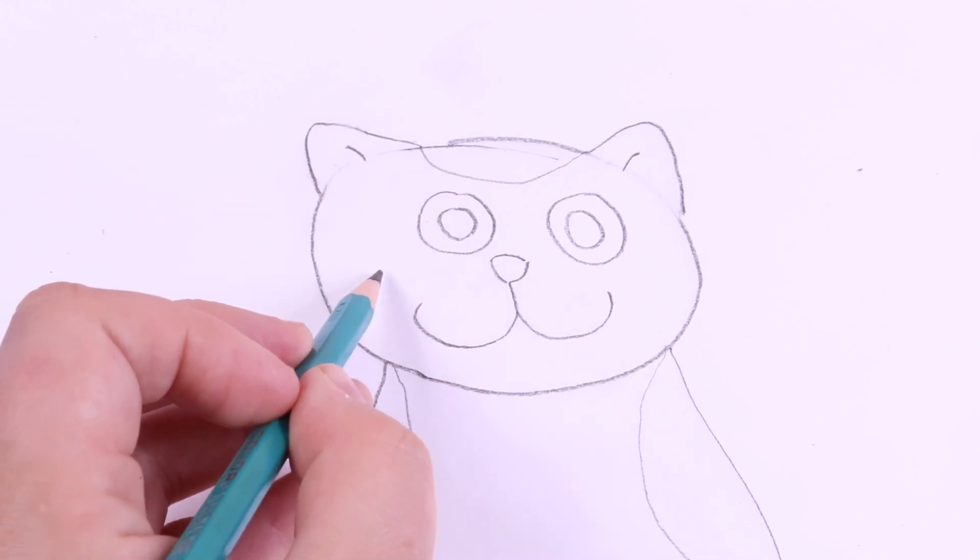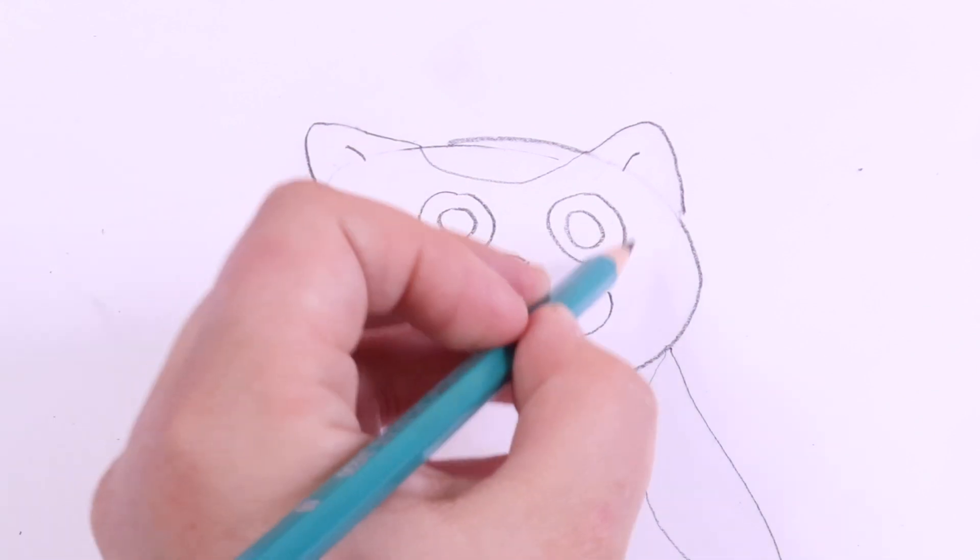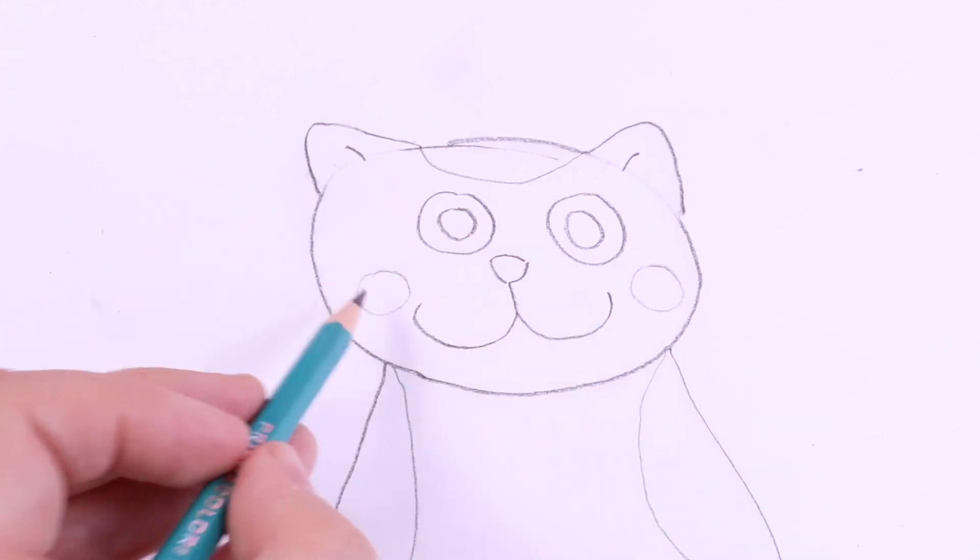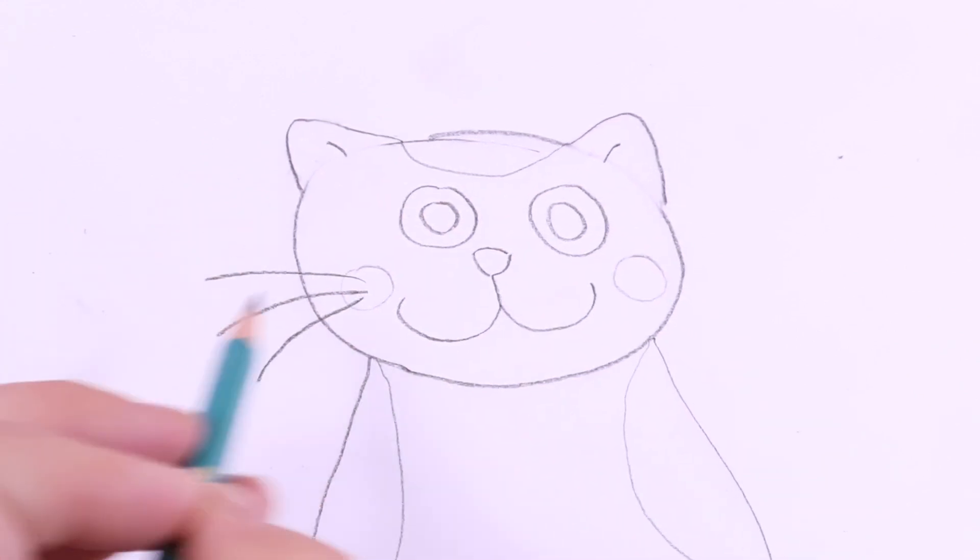Cats also have whiskers. Let's add a little spot on each side and make whiskers grow out of that spot.